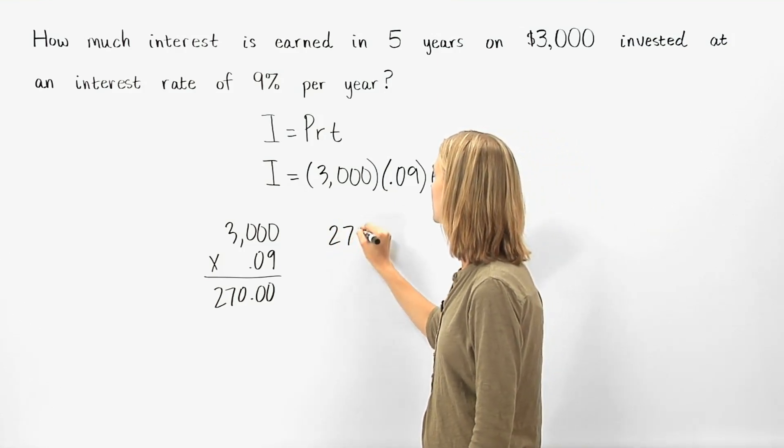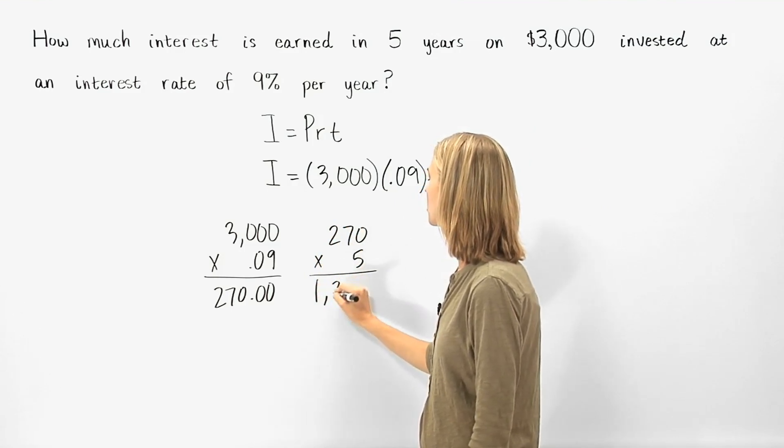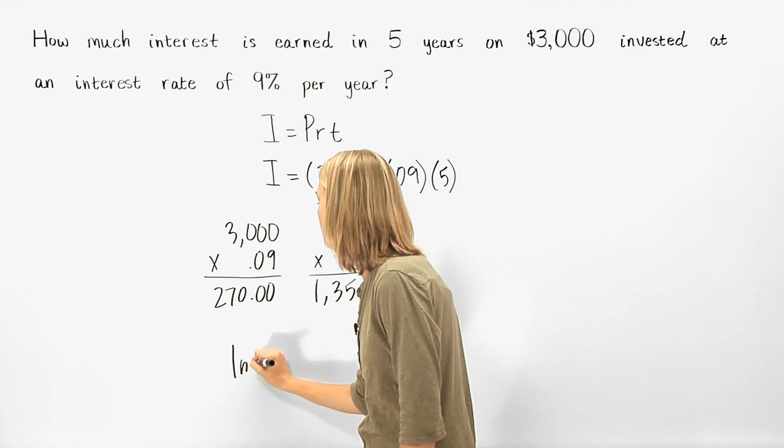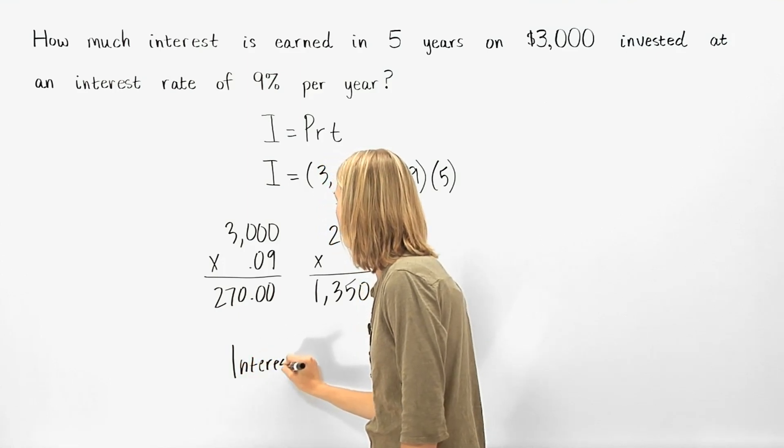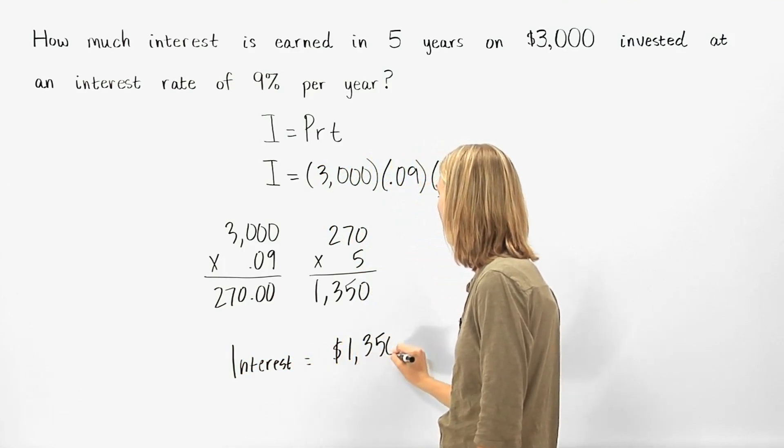And 270 times 5 is 1,350. So the interest earned is $1,350.